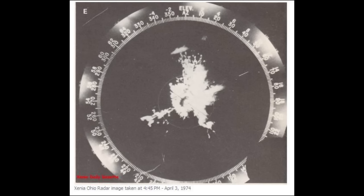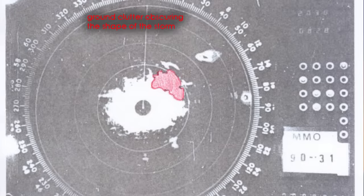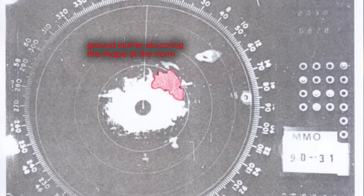If you watched my video on the super outbreak of '74, you know that the radars of the time could see the size and the shape of the storm, but they could not detect the wind field. Furthermore, it was reported that the technician observing the Plainfield tornado didn't know how to tilt the radar upwards. The result was ground clutter — the reflection of the radar beam off the ground — making it impossible to see the shape of the Plainfield storm.